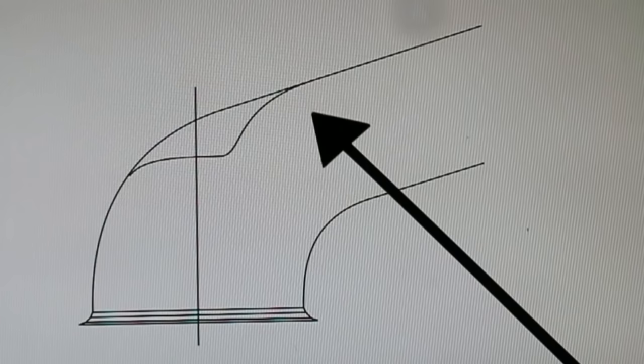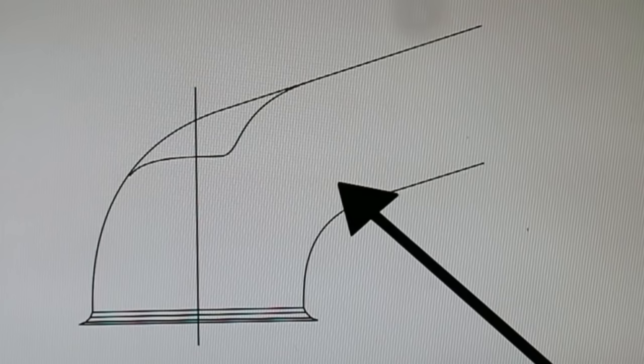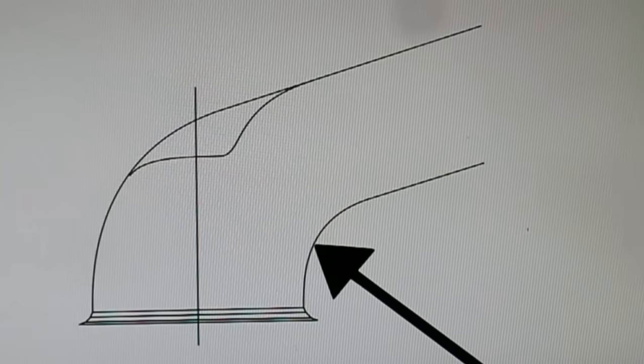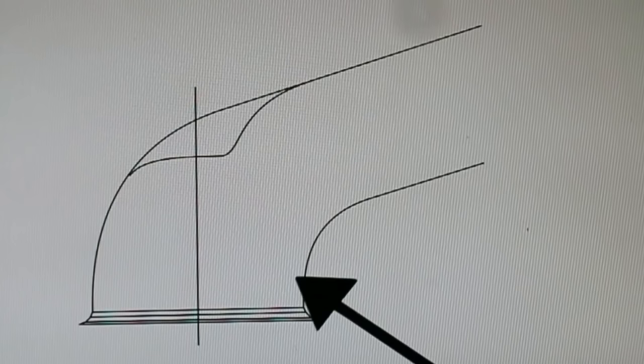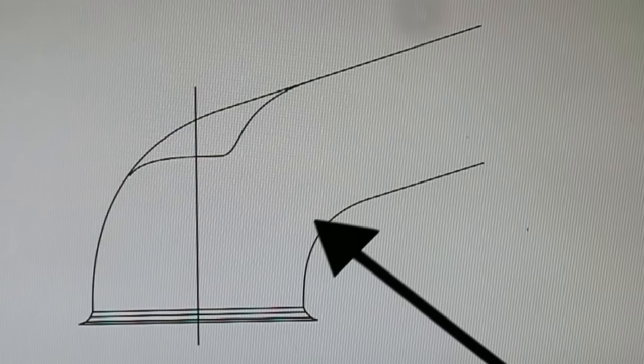But here, you can see this diameter here, all the way to there, constitutes the energy bucket. From here on, around here, the area is increasing. This area here is quite substantially bigger than this here, typically 20 to 25%.